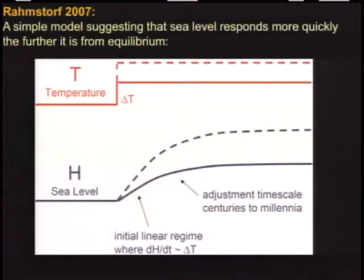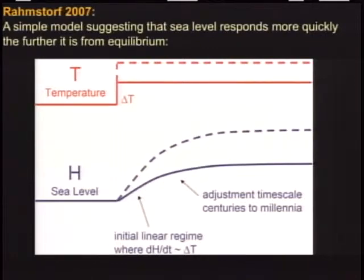Stefan Ramsdorf suggested this very simple response model — a very simple response to temperature change. If you have a step temperature change, the sea level responds with some adjustment timescale. If the temperature change is larger, the adjustment will be faster but following this similar timescale. So the magnitude of the sea level adjustment over time — this slope — is proportional to the temperature change. One of the things which is different from what Stefan did looking at the last century's change is we cannot assume that the temperature change and sea level change are constant.